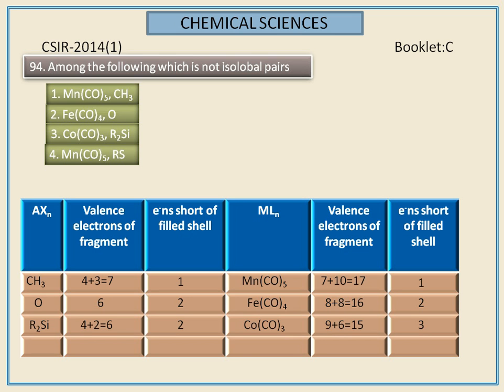Next, we calculate for alkyl sulfur and pentacarbonyl manganese. The number of valence electrons for alkyl sulfur is 7, and for pentacarbonyl manganese the number of valence electrons is also 7. In both cases, it requires only 1 electron to get the stable configuration.